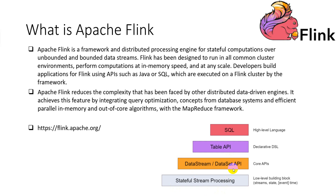The DataStream API supports Java, Scala, and Python and offers primitives for many common stream processing operations, providing a balance between expressiveness and control. The Table and SQL APIs are relational APIs that support Java, Scala, and SQL. They offer the highest level of abstraction and intuitive SQL-like declarative control over data streams.